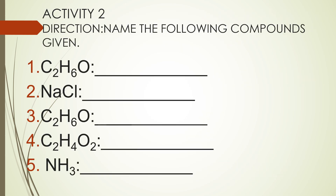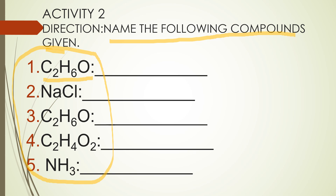Next, activity number two: name the following compounds. What is the name of C2H6O? Write it. What is NaCl? Write the name. C2H6O appears again — you have another chance to get it right. Number four: C2H4O2. Number five: NH3. Write the compound names beside each formula or in your notebook.